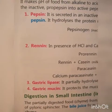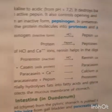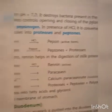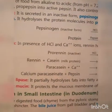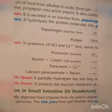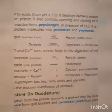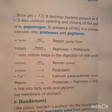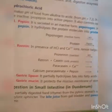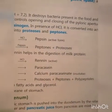Rennin is present in inactive form — Prorennin. In the presence of HCl and calcium, Rennin helps in the digestion of milk protein. Rennin acts on casein (milk protein) and converts it into calcium paracaseinate, which is in insoluble form. Then, pepsin acts on calcium paracaseinate and breaks it down into proteoses, peptones, and polypeptides.